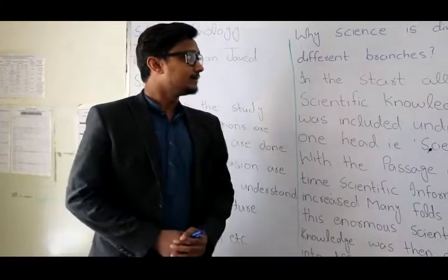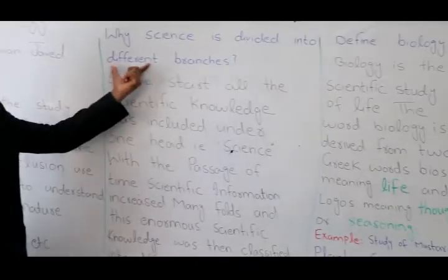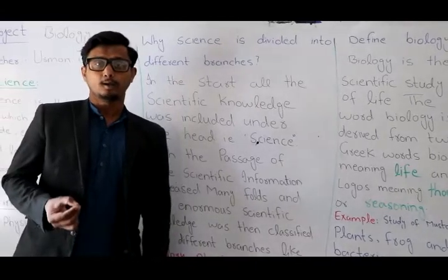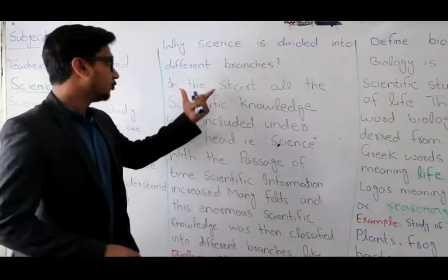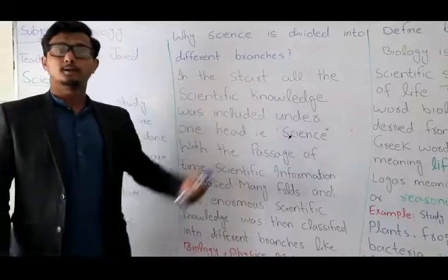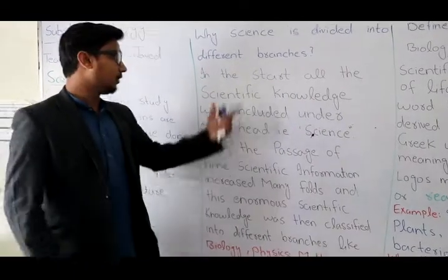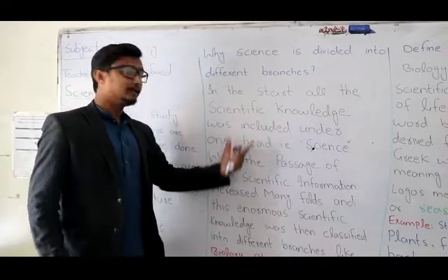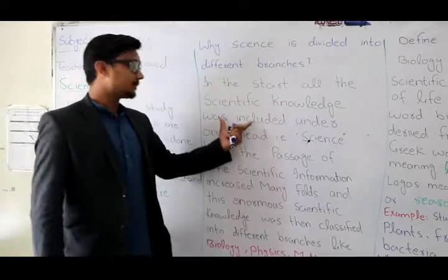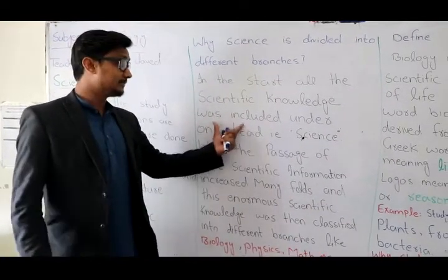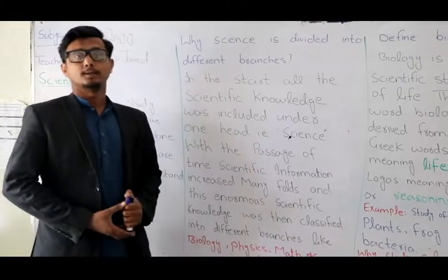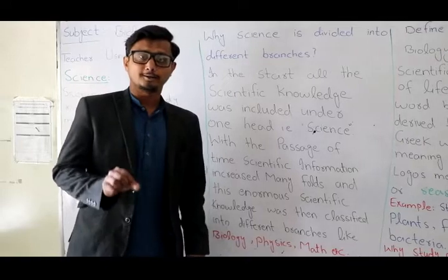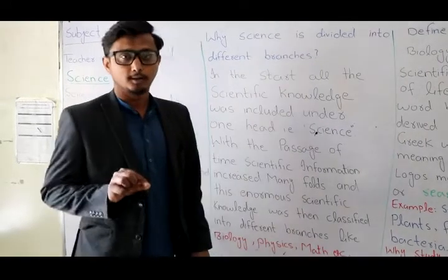Why is science divided into different branches? The reason is that the whole scientific knowledge was originally one piece. But over time, the knowledge of science increased, so science was divided into branches: biology, physics, chemistry, and more.